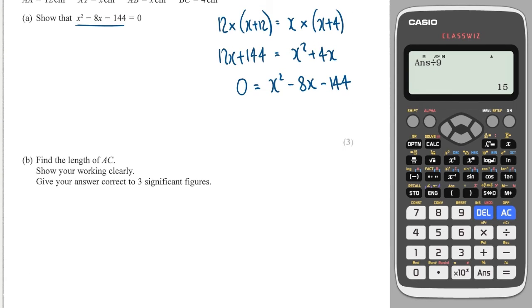And then it's asking me to work out the length of AC, showing your working clearly, and giving your answers to three significant figures. So the fact it's three significant figures implies I'm going to have to use a quadratic formula here. So I'm going to write X is equal to minus B, so minus minus 8, plus or minus the square root of minus 8 squared, minus 4 times by A, which is 1, times by C, which is minus 144. And that's all over 2A.